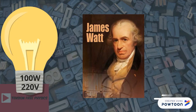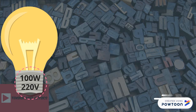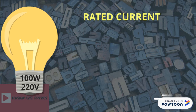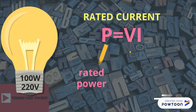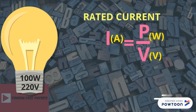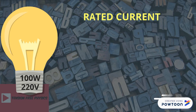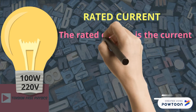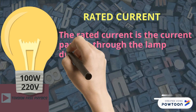Note that watt is the surname of the scientist James Watt and it is the SI unit of electric power. From these two inscriptions, the rated power and the rated voltage, we can calculate the rated current I using the formula P = V × I, where P is the rated power, V is the rated voltage, and I is the rated current. To find the current I, we put I in amperes equals the power in watts over V in volts. The rated current is the current passing through the lamp during its normal functioning.